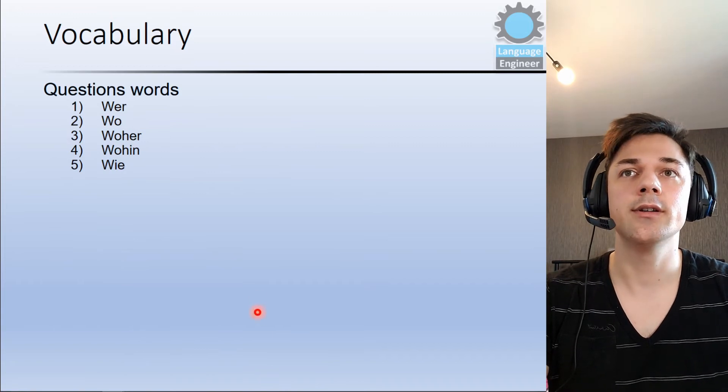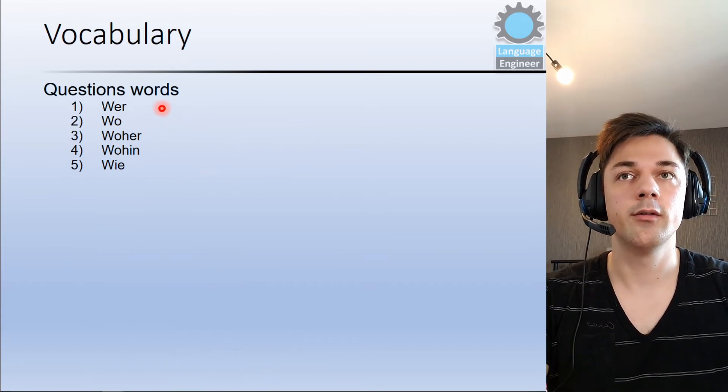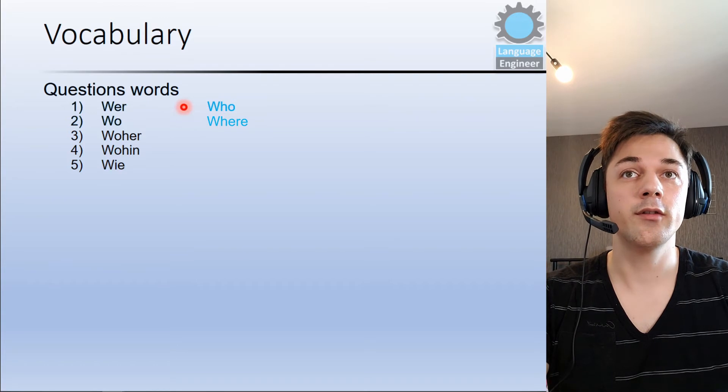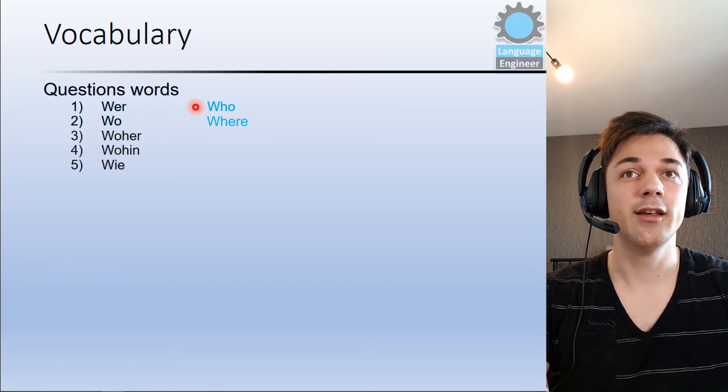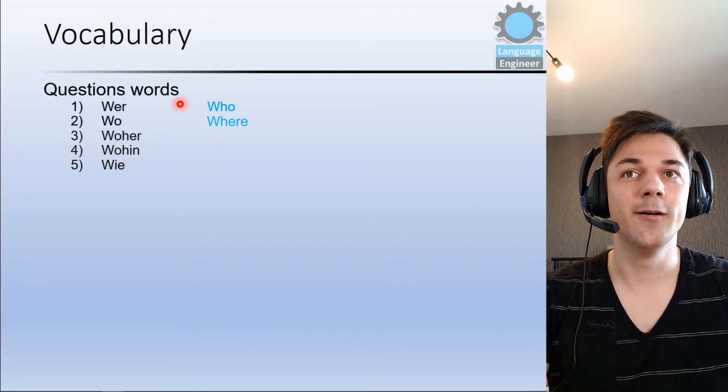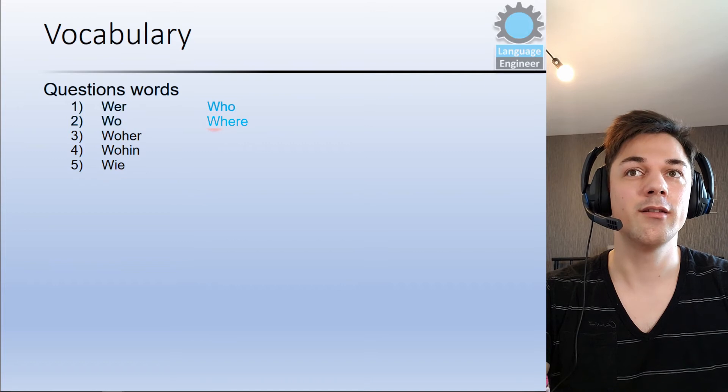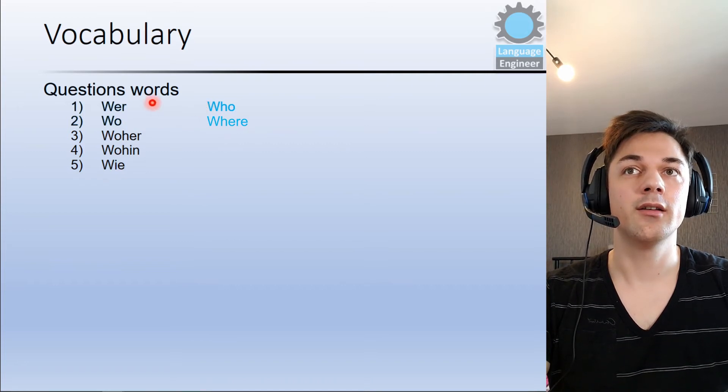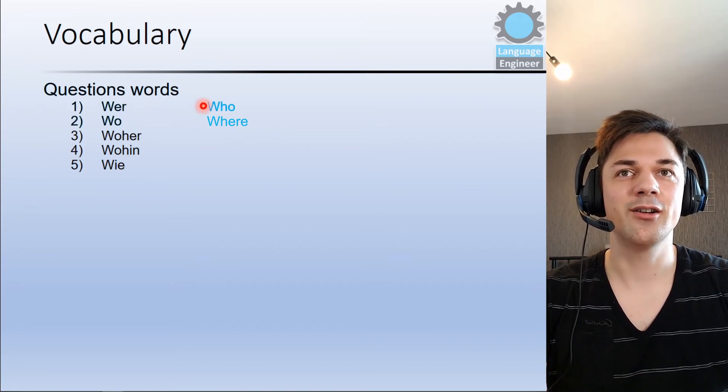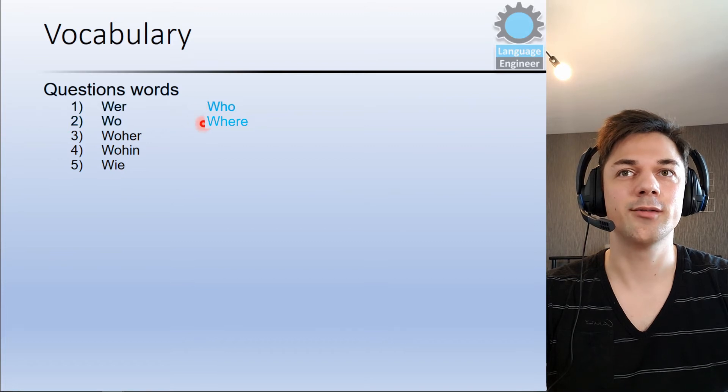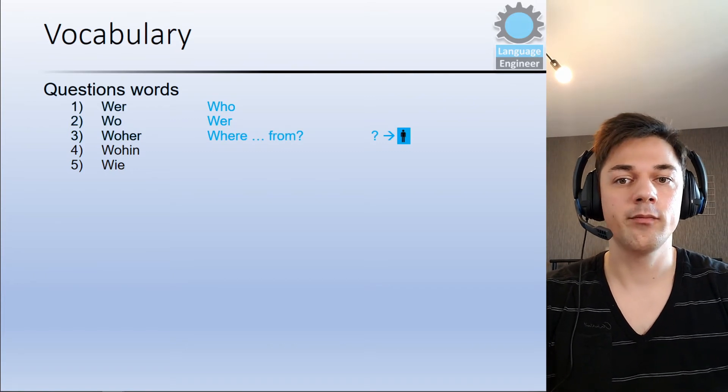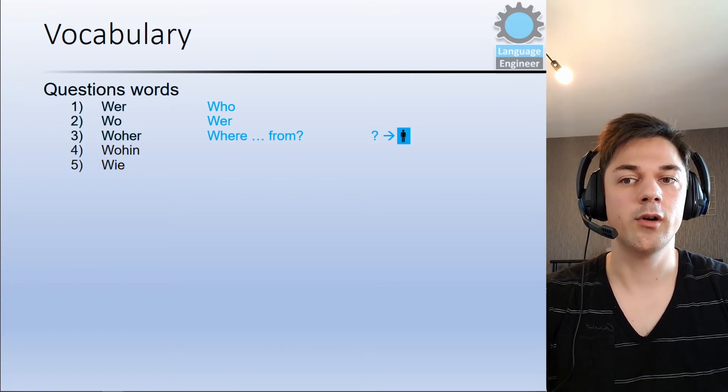The next section is the question words. Wer means who and wo means where. A lot of German students who study English, they have a problem with who and where. And now you can see why, because wo means where and wer means who. So it's a bit confusing, right? Because it looks like opposite of English. Woher means where from. For example, where are you from. Woher kommst du.